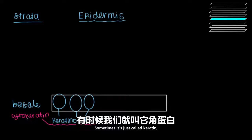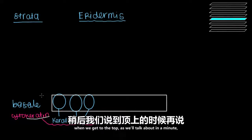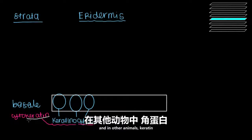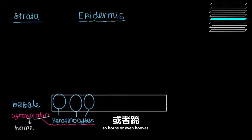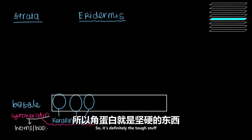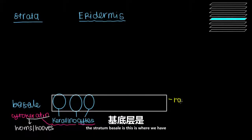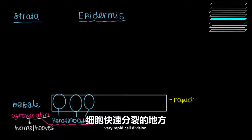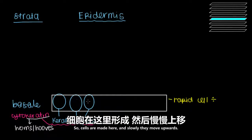Cytokeratin is sometimes just called keratin, and it helps give our skin its tough outer layer. In other animals, keratin is actually the main ingredient for things like horns or even hooves, so it's definitely the tough stuff that helps protect our skin. Another very important thing to know about the stratum basale is this is where we have very rapid cell division, because this is the bottom layer of our epidermis — cells are made here and slowly move upwards.